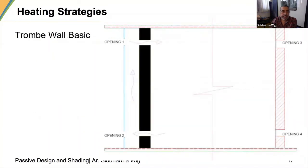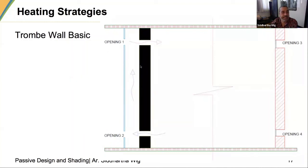In a Trombe wall, all of you are familiar with the basic concept: there are no direct openings; you have a glass sheet, a thick wall often painted black, and the sun's rays come in. The wall gets heated, hot air rises into the room, it forms a loop, and cold air comes in at the bottom. This is a good example of how indirect gain can take place. There can be many variations on this basic wall.